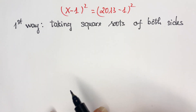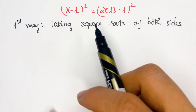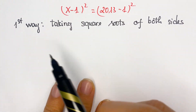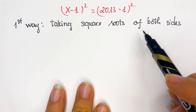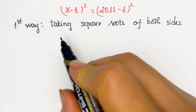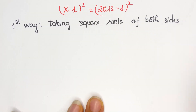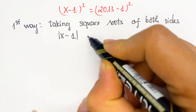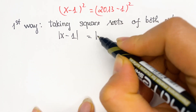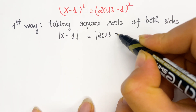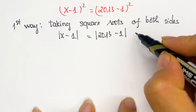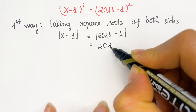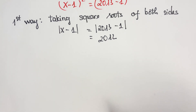Hello everyone, today we're going to solve the equation in three ways. For the first way, taking squares of both sides — we have absolute values on the left hand side. Therefore we have absolute value of x minus 1 equals absolute value of 2013 minus 1, which equals 2012.